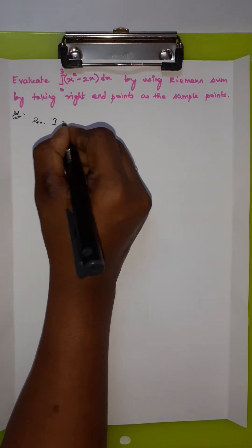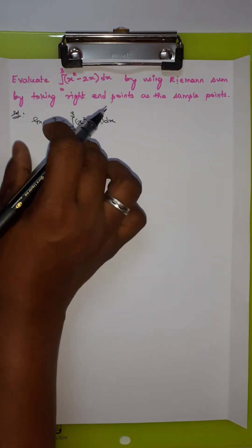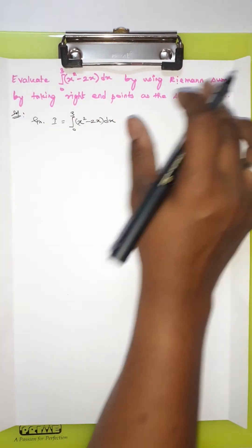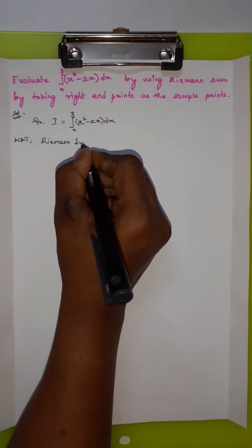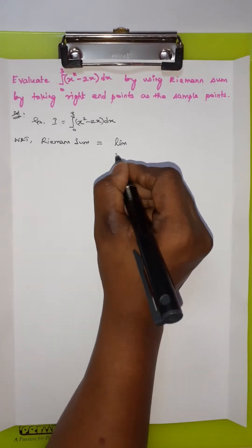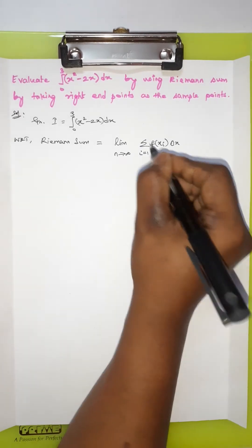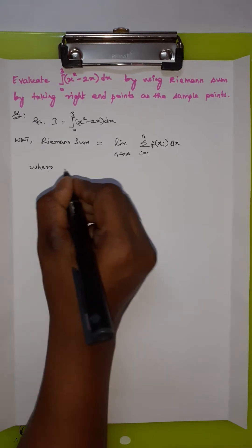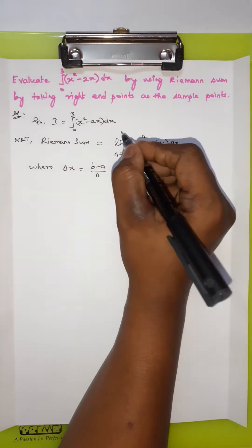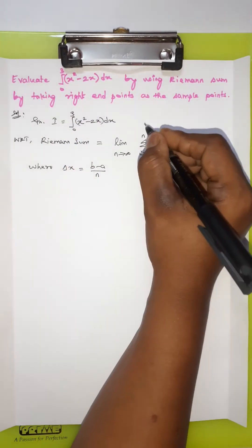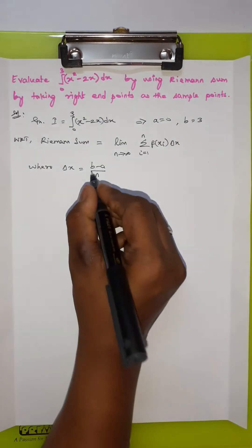So, it is given that I is equal to the integral from 0 to 3 of (x² - 2x) dx. We need to find the Riemann sum for this integral. We know that the Riemann sum is given by the limit as n tends to infinity of the summation of f(xᵢ) · Δx, where i ranges from 1 to n, and the width Δx is given by (b - a)/n. Here, the lower limit a is equal to 0 and the upper limit b is equal to 3.